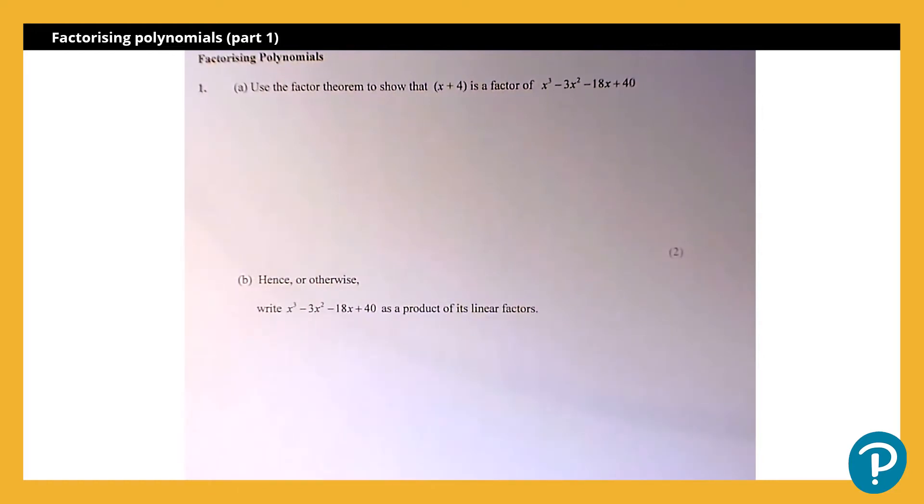It says use the factor theorem to show that x+4 is a factor of x³-3x²-18x+40.